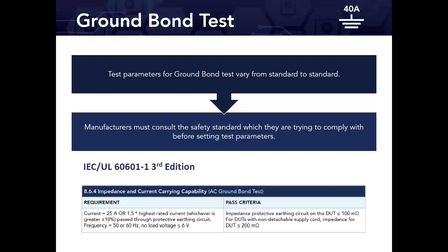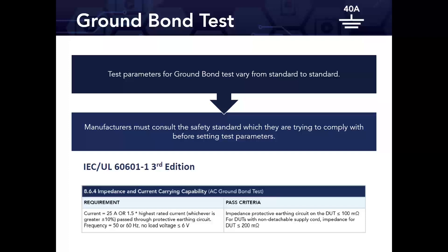Test parameters for ground bond tests vary from standard to standard, and manufacturers must consult the safety standard they're trying to comply with before setting parameters. The standard we're delving into today is IEC / UL 60601-1 third edition.